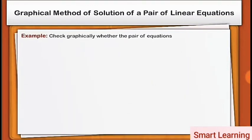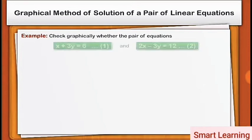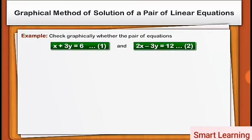Let us now consider an example to illustrate it. Check graphically whether the pair of equations x + 3y = 6 and 2x − 3y = 12 is consistent. If so, solve them graphically.